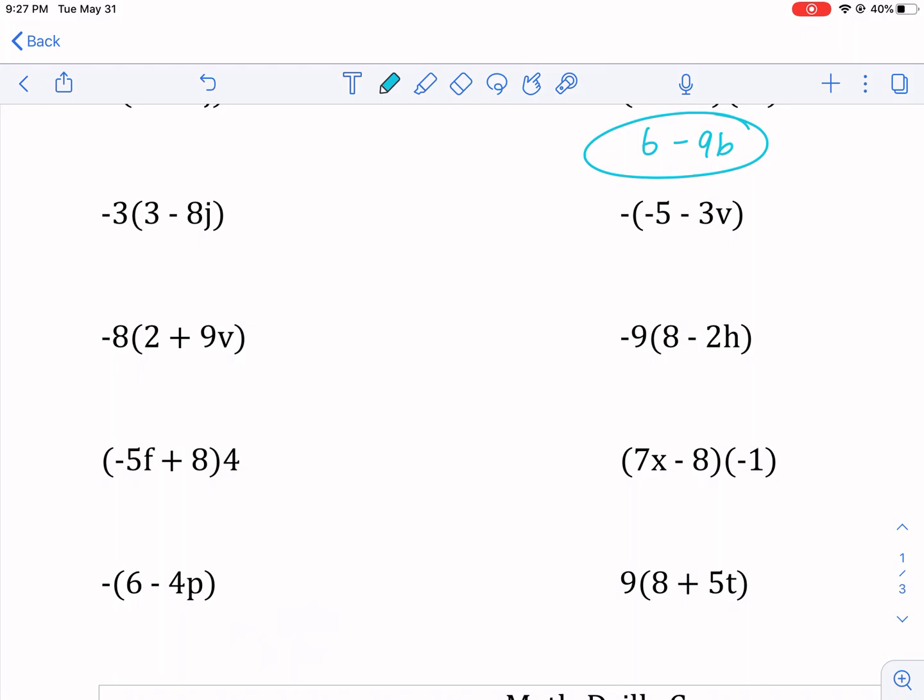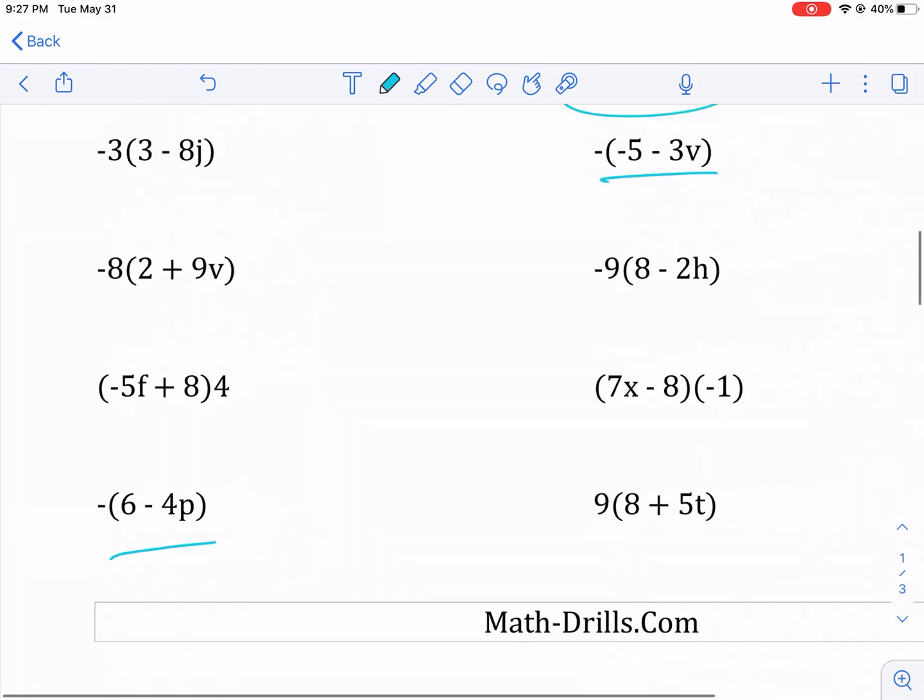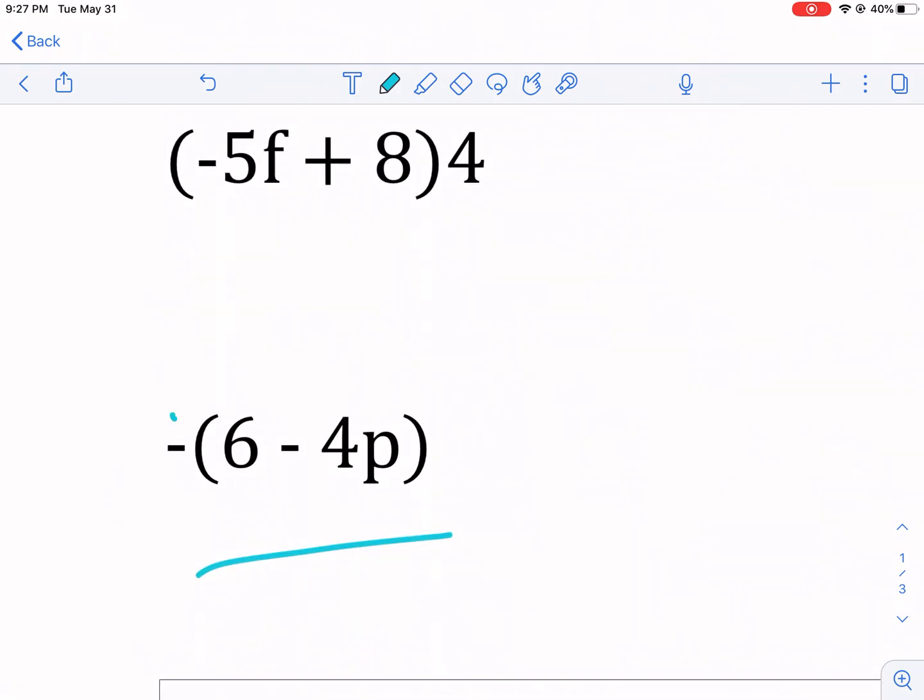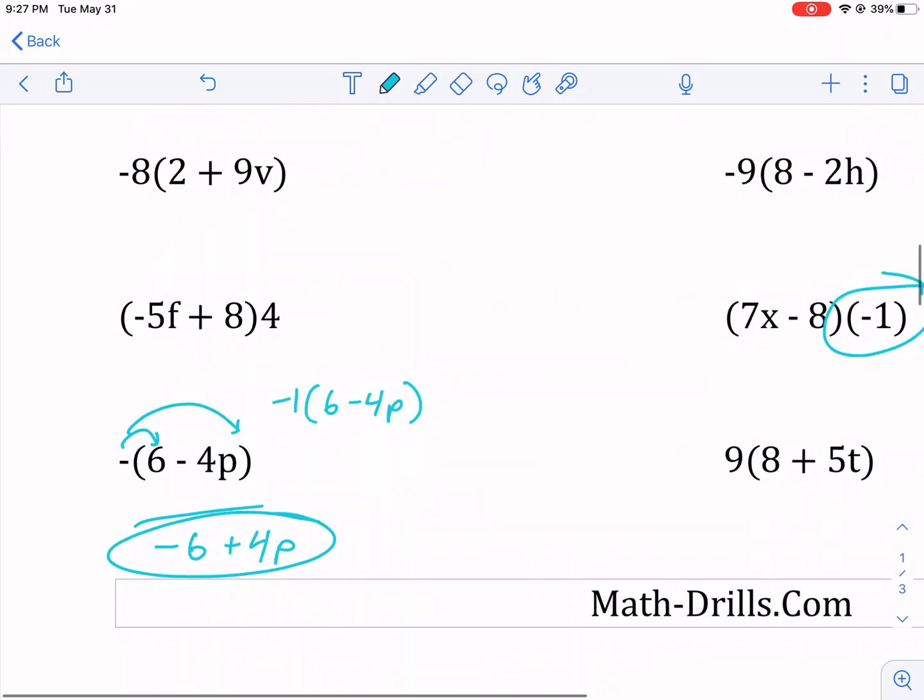What about something like this one and this one? Those look tricky, but essentially it's the same as negative 1. If you just have a negative sign out in front, we can distribute that. It's the same thing as having a negative 1 times 6 minus 4p. So don't forget, you just change the sign, essentially, of everything inside the parentheses. Negative 6 plus 4p is going to be the result of that. And that's all there is to it.